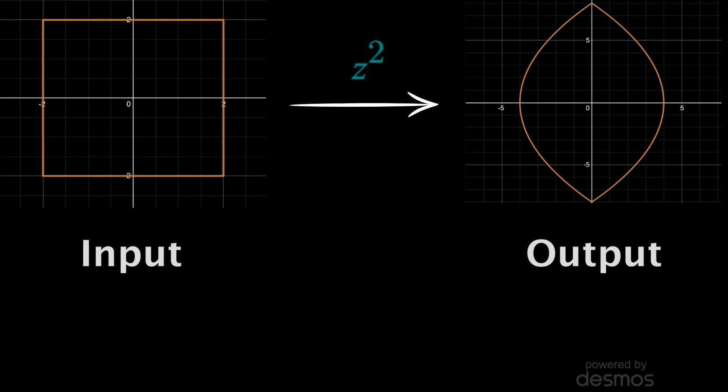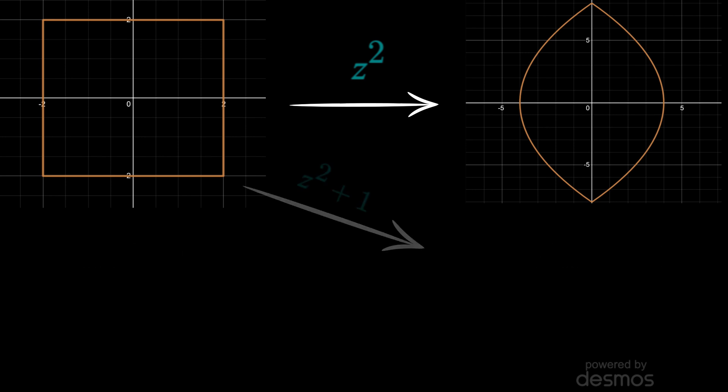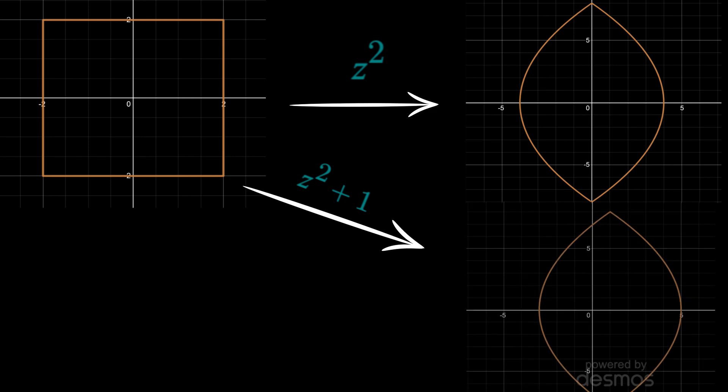If I use the same contour but run it through z squared plus 1, the contour just moves 1 to the right, similar to before. So this is also something not very new. But there is some predictable and useful behavior when it comes to the output contour that we haven't seen yet.